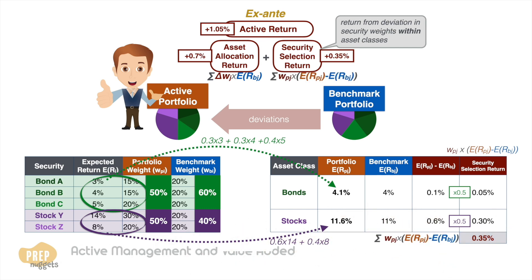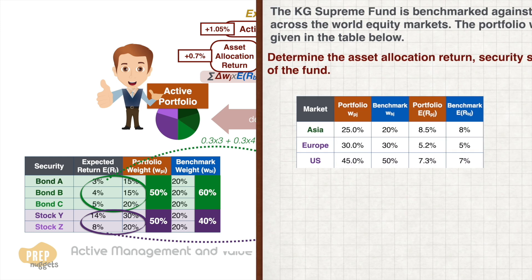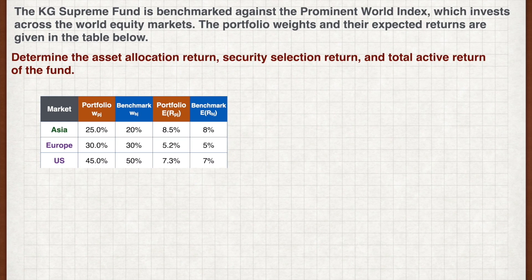The formula for calculating security selection return and the formula for calculating active return based on its components are provided, though memorizing them is not recommended as they are complex. It's better to practice and understand the concept. Now it's your turn: the KG Supreme Fund is benchmarked against the Prominent World Index, which invests across world equity markets. The portfolio weights and their expected returns are given in the table below. Determine the asset allocation return, security selection return, and total active return of the fund.